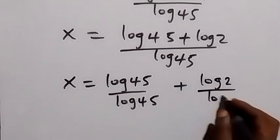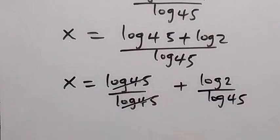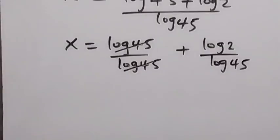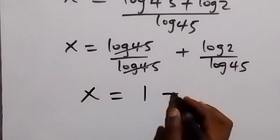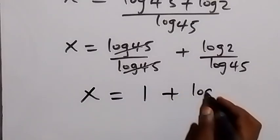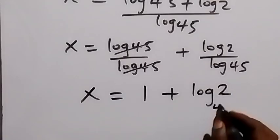From here, log 45 over log 45 equals 1, so we have x equals 1 plus log 2 over log 45. We can write this as 1 plus log base 45 of 2.